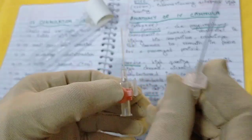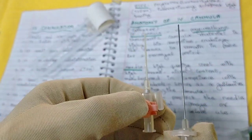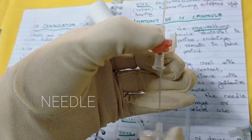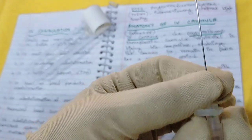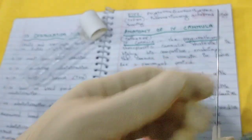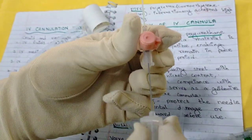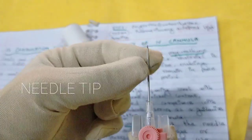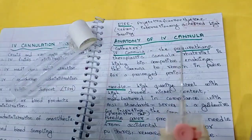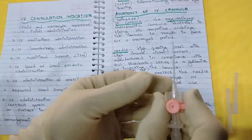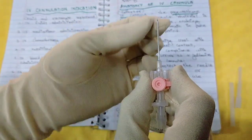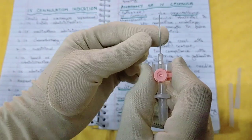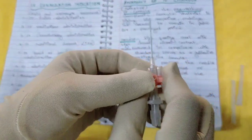Then next you have the needle. As you can see, this is the needle which is placed inside the catheter. This needle is made up of high quality steel with high chrome nickel content, manufactured according to standard. When assembled, this is the needle tip, which is triple bevel. This triple bevel tip allows effective venipuncture — it supports effective puncture when inserting into the vein.